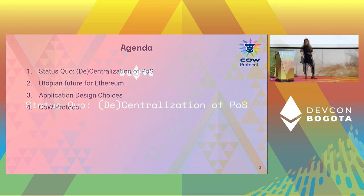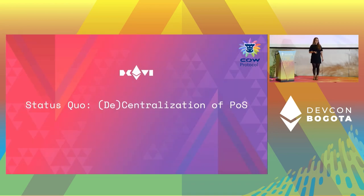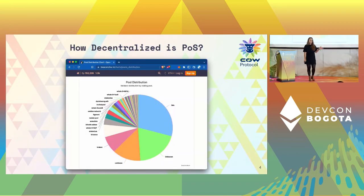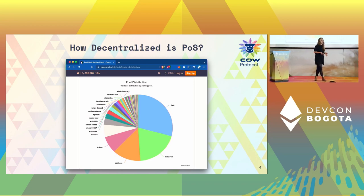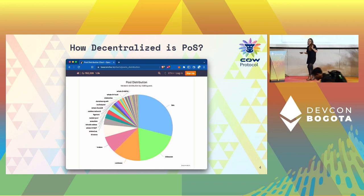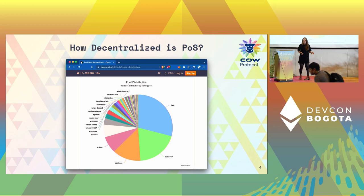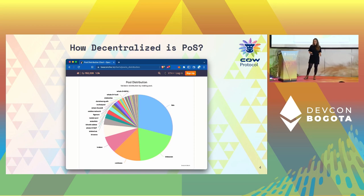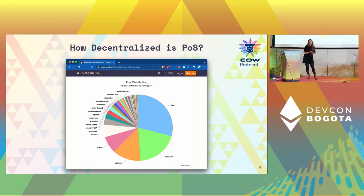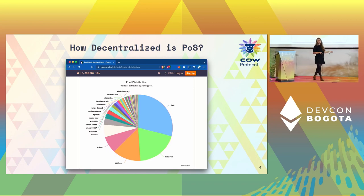Let's look at some data. The talk right before was focusing on validators, and as was said, the set of validators today is quite centralized. You have staking providers such as Lido who hold more than 25% of the market share, followed by individual stakers, and then centralized exchanges — Coinbase, Kraken, and Binance — who combined also make up more than 25% of the entire validator set on Ethereum today.